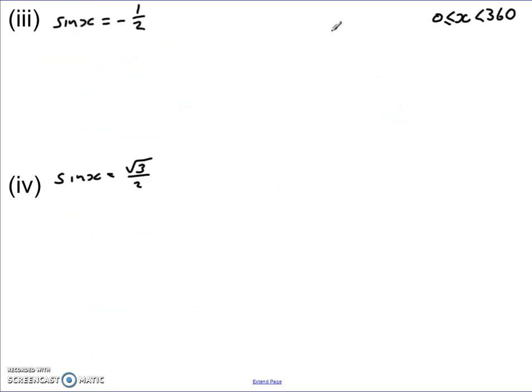Similarly, with the sin x being negative as well, we have to draw our CAST diagram, and again, we're looking for regions within the CAST diagram, where in this case, it's sin that's negative.